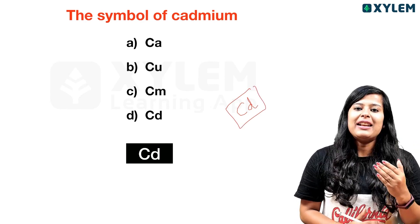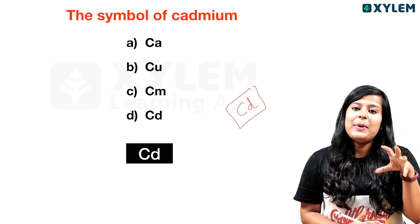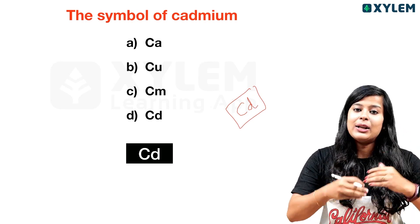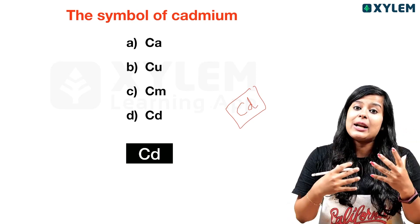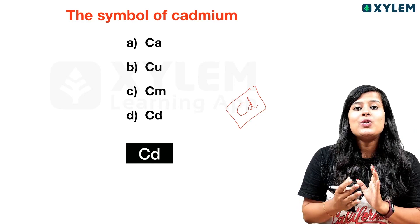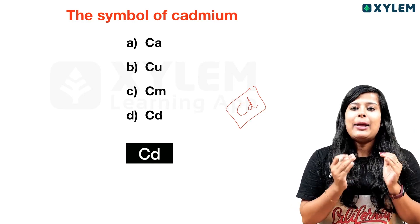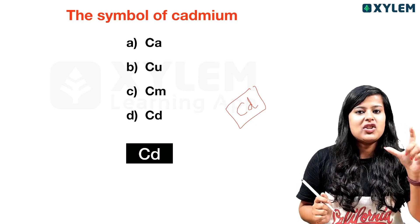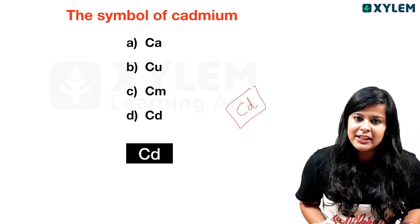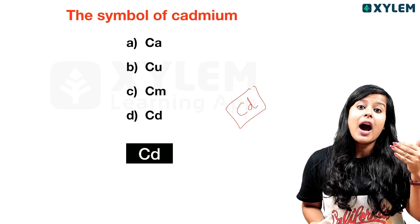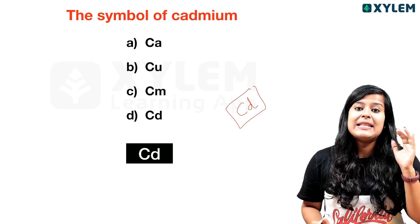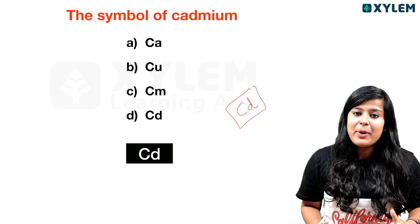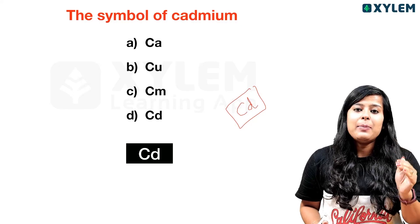If you want to use a capital letter, you can use it as the first letter of an element — like C for carbon. For cadmium, we use Cd — capital C, small d.